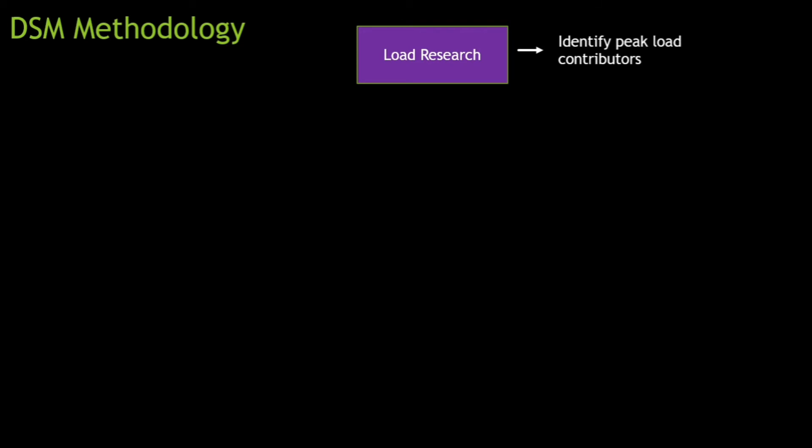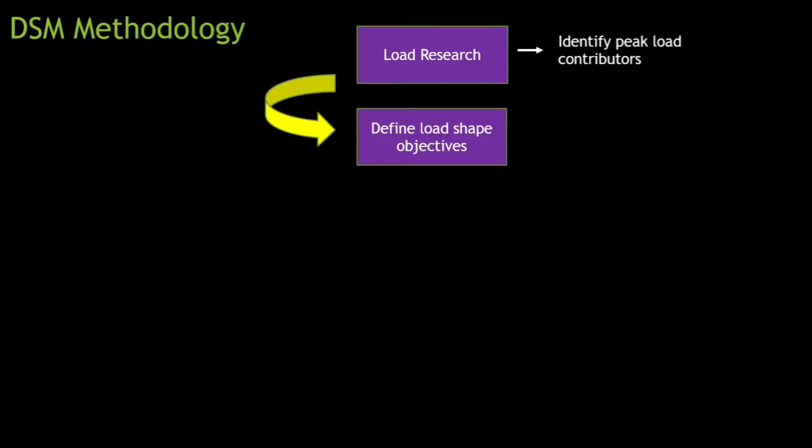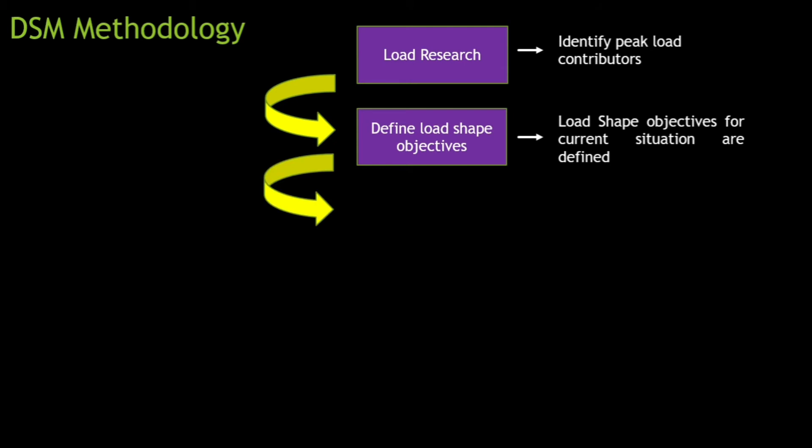Now, what is the methodology? The first step is load research — you have to survey your load. In load research, you identify the peak load contributors. Analyze your plant or industry thoroughly to find out which equipment is responsible for peak load. Until we analyze, we cannot create a plan of action. After load research, the second step is to define load shape objectives. Once you know who the peak load contributors are and at what point in time the peak load occurs, you can define load shape objectives for the current situation.